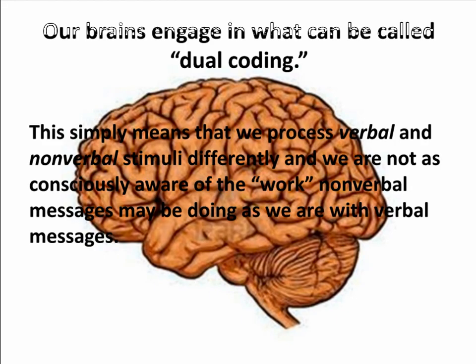The operational concept here is the notion of dual coding. Our brains operate at two levels — we process verbal and nonverbal stimuli differently, and we're sometimes not as consciously aware of the work that nonverbal messages are doing. We know when a salesperson explicitly says 'I'd like you to be interested in this product,' but when we're watching television or surfing the web, visual images are categorized in our heads as entertainment. Therefore, those messages have the opportunity to work on us without us being consciously aware that they're trying to sell us something.